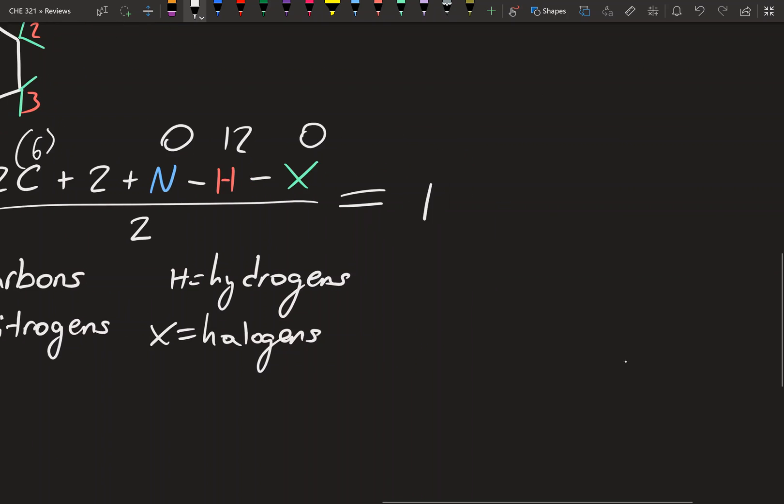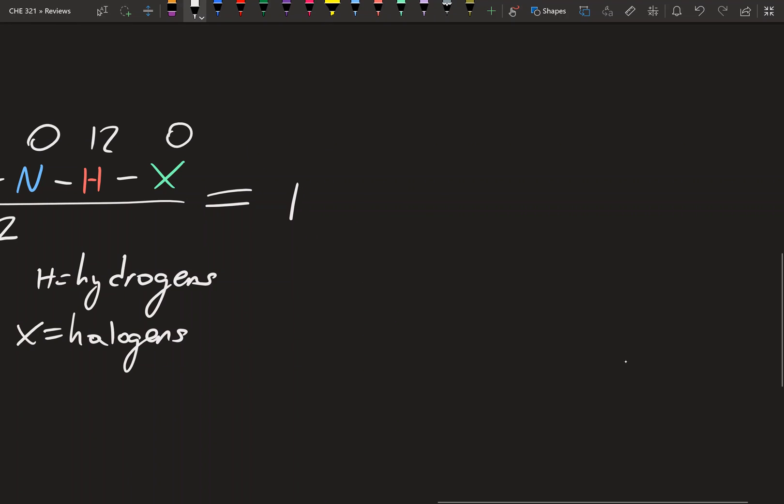And so what that means is you are allowed to have either one double bond or one ring. So it's 1 or the other, not both. And that also means this is not an alkane. If you had an IHD of 0, that's an alkane. If you have an IHD of 1, that means you have to have a double bond or a ring in the structure. And so if you do this before you start drawing, it'll make the problem much quicker.